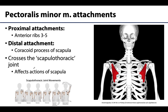Moving on to the pectoralis minor muscle, which is just deep to the much larger pectoralis major — it would be completely covered by pec major. The muscle's proximal attachments are on the anterior surfaces of ribs 3 through 5, and the distal attachment is on the scapula, specifically the coracoid process. You can see that it does not cross the shoulder joint, so it will not have a direct effect on the shoulder joint, but will certainly have an indirect effect.